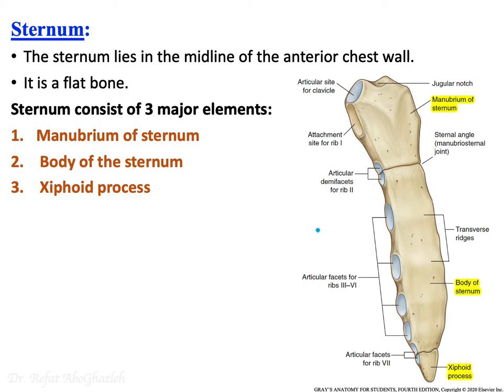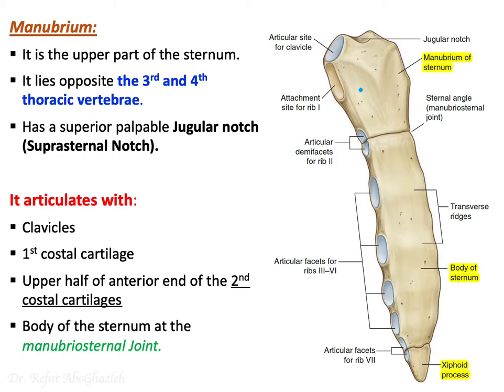The thoracic cage consists anteriorly of the sternum. You can feel it in the midline of your chest — it is a flat bone. It is not one piece; it is composed of three parts: the most superior is the manubrium, then the body of the sternum, and the xiphoid process.